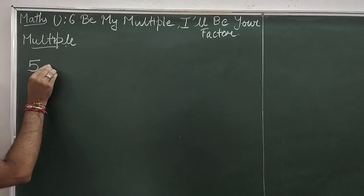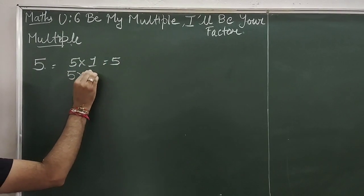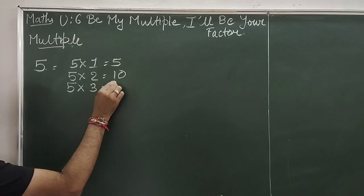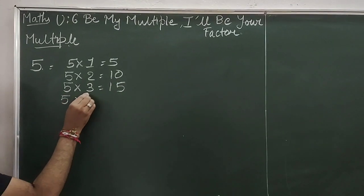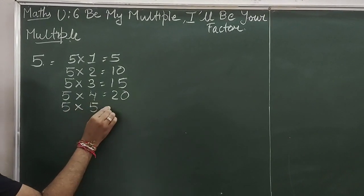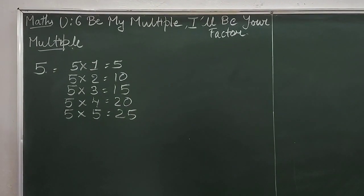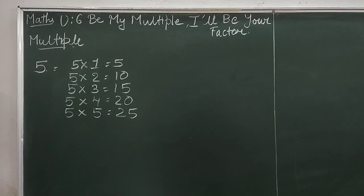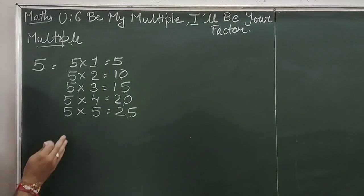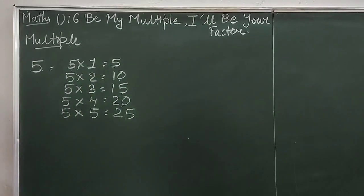Let's write down the table of 5. 5 ones are 5, 5 twos are 10, 5 threes are 15, 5 fours are 20, 5 fives are 25, and so on. You all know the table of 5 very well. So 5, 10, 15, 20, 25, and if we continue the table further — all these numbers are called the multiples of 5.